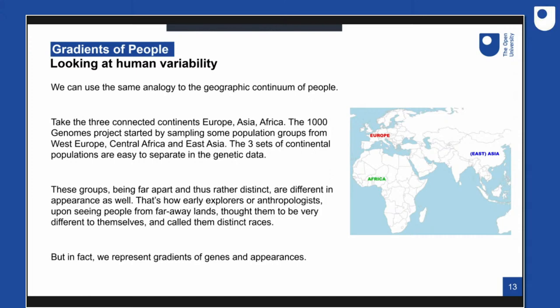A big genetics project called the 1000 Genomes Project started to understand human variability by sampling populations from West Europe, Central Africa, and East Asia. People from these three different places are relatively easy to separate in genetic data, and they're also quite distinct in appearance. That's how explorers and anthropologists, upon seeing people from far away lands, thought these people were very distinct and called them distinct races.